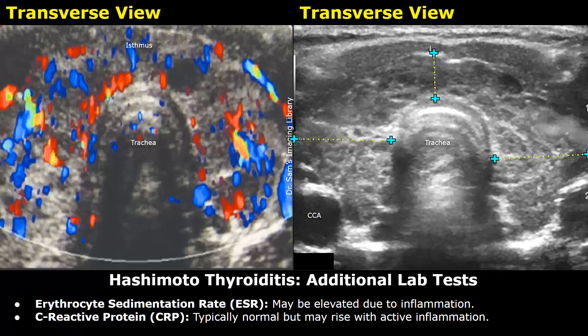Additional lab tests include ESR and CRP. ESR may be elevated due to inflammation, while CRP is usually normal but may be elevated in some cases.